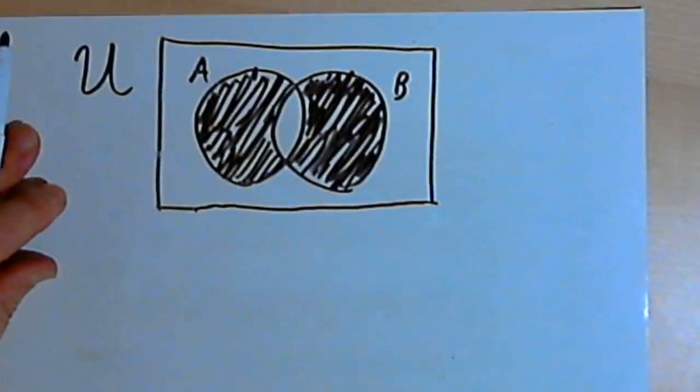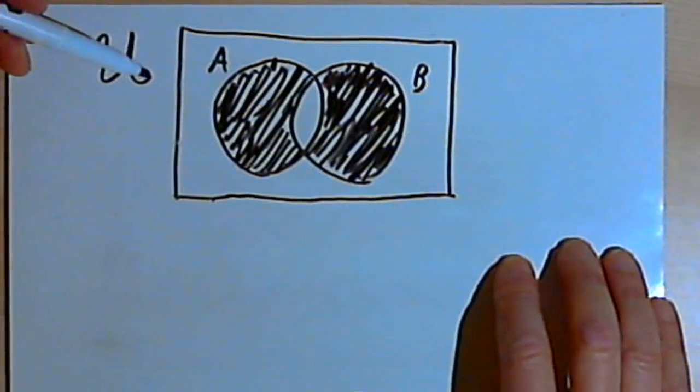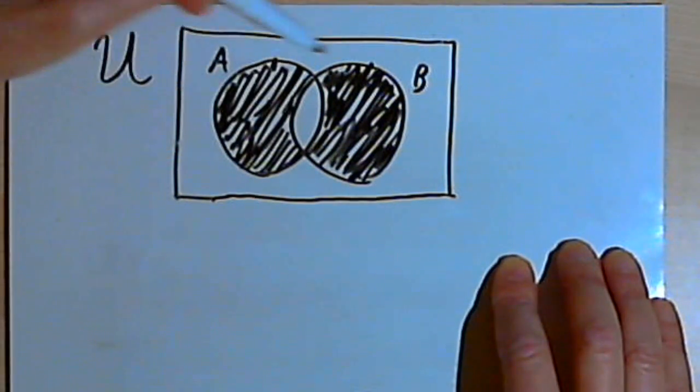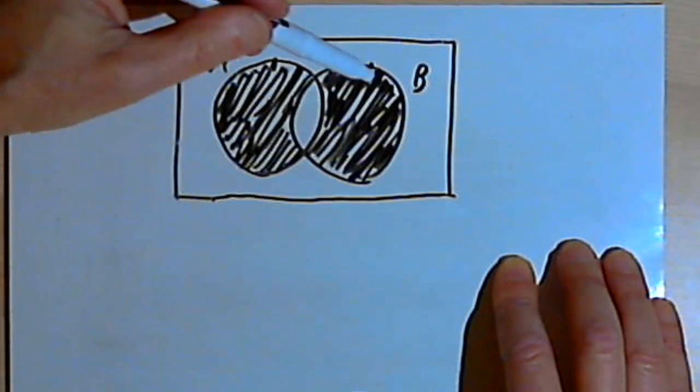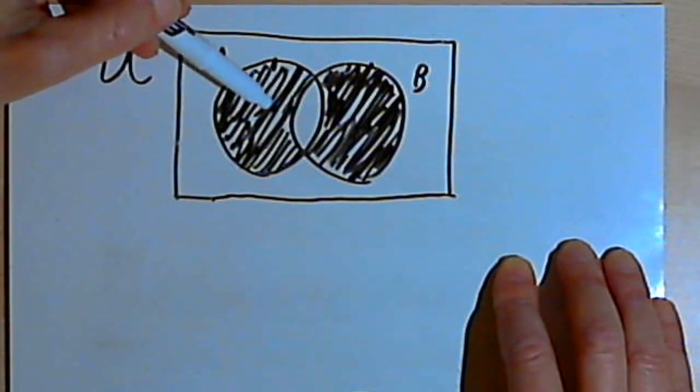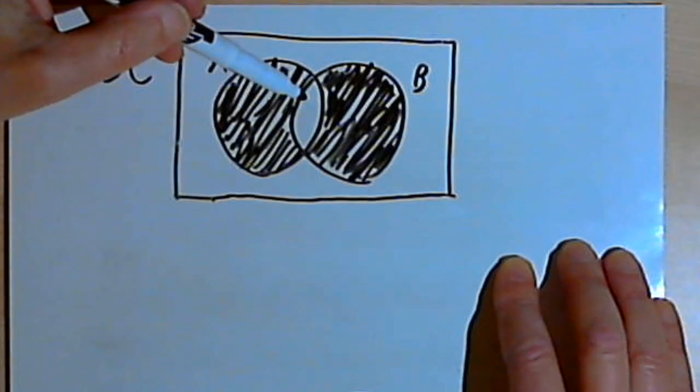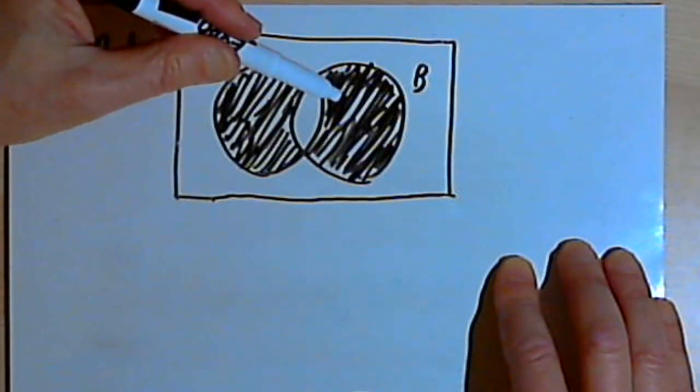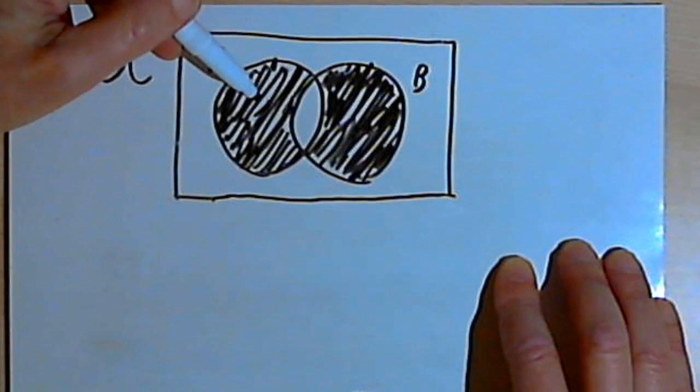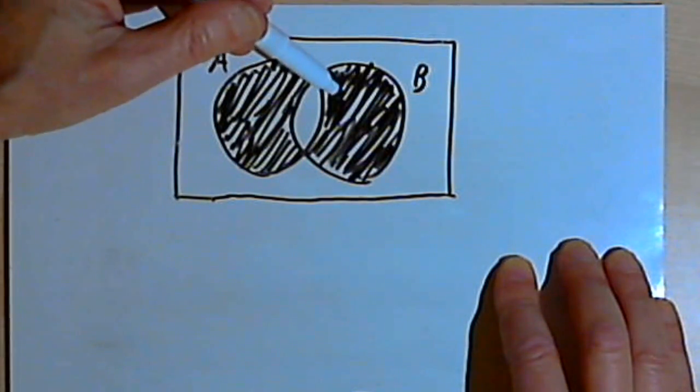So here's the first diagram I have. I've got my universal set, that's the rectangle, and inside there I've got sets A and B, and they overlap. And A and B are completely shaded except for the overlap. Now we can take that description and use that to figure out the operations that made that picture.